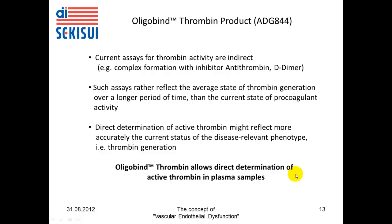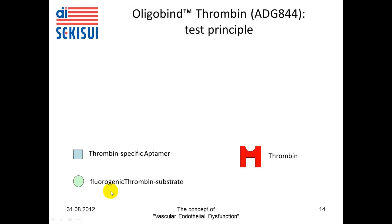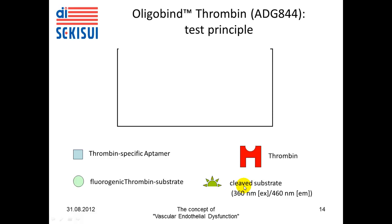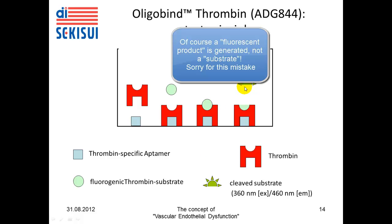Oligobind Thrombin allows direct determination of active thrombin in plasma samples. The test principle is as follows: we have a thrombin-specific aptamer, or oligonucleotide; we have thrombin; we have a fluorogenic thrombin substrate; and we have a cleaved substrate, which is fluorescent. The assay is set up so that the thrombin-specific aptamer binds the thrombin, and the bound thrombin then cleaves the fluorogenic thrombin substrate, generating a fluorescent signal.